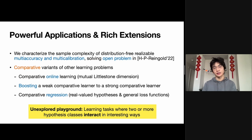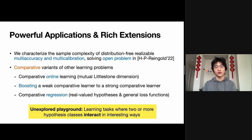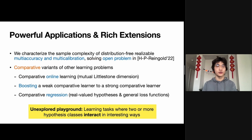Usually in learning theory, a learning task only involves a single hypothesis class. But our results show that there are a lot of interesting results to be discovered in settings where there are multiple hypothesis classes. In fact, in the algorithmic fairness literature, people have already looked at many learning tasks with multiple hypothesis classes. But to the best of our knowledge, there hasn't been a lot of work that studied the interaction between hypothesis classes or defined complexity measures for pairs of hypothesis classes, except for this work and our earlier work with Omer Reingold. So there is still a lot to explore in this area.